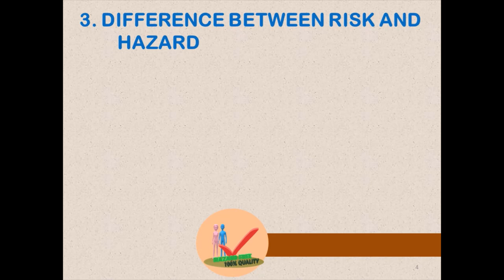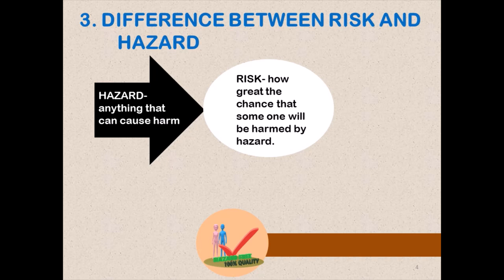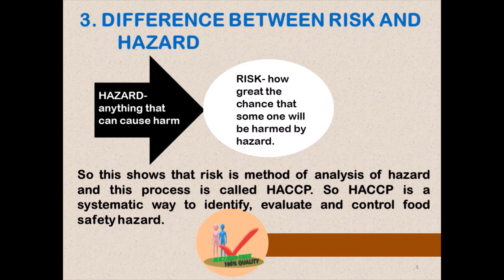The difference between risk and hazard is: hazard means anything that can cause harm. Risk means how great the chance that someone will be harmed by a certain hazard. Risk is a method of analyzing hazards, and this process is called HSECP — a systematic way to identify, evaluate and control food safety hazards.